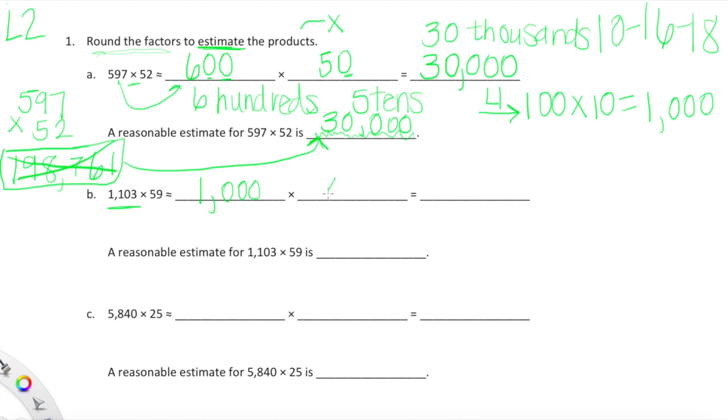Anyway, 59 is really close to 60. I'm rounding specifically so that I can multiply these in my head. I can multiply one times six. Boom. But it's not one times six. It's 1,000 times 60. 1,000 times 60 is going to be a six with four zeros at the end. Because we have 1,000, 1,000 times 10 essentially. 1,000 times 10 equals 10,000. So 1,000 times 60 is equal to 60,000. A reasonable estimate for 1,103 times 59 is going to be 60,000.